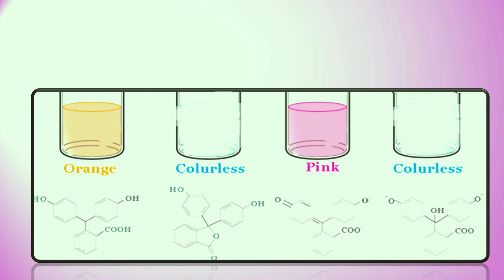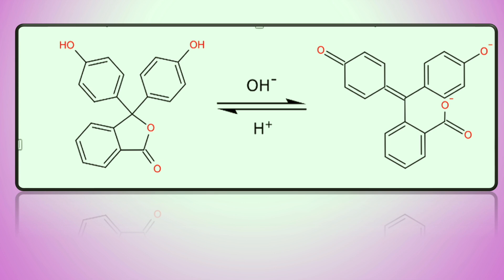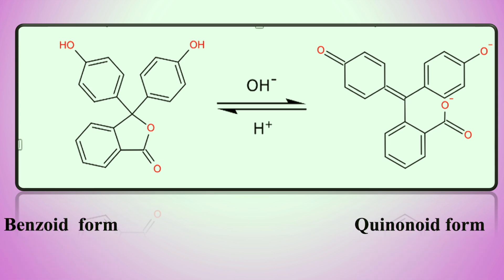Phenolphthalein is a weak acid and colorless in solution. If hydrogen ions (H⁺) are added to the solution, it remains colorless. Adding hydroxide ions (OH⁻) causes it to change to pink. It is orange at pH 0–3, colorless at pH 4–7, pink at pH 8–10, and again colorless at pH 11–14.